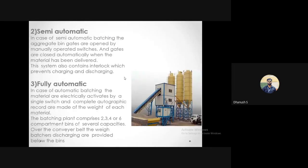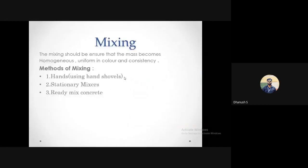Once batching is done — by either weight or volume batching — the materials need to be mixed. Mixing can be done by various ways depending on project size, budget, and desired ease of construction. For a 20-story building you can't do hand mixing — it takes too long, is uneconomical, requires many laborers, and the quality of concrete obtained is poor. For high-story buildings where quality and strength are primary concerns, you should spend extra money and order concrete from a ready mix concrete plant. The three methods in order of quality control are: hand mixing, stationary mixers, and ready mix concrete.